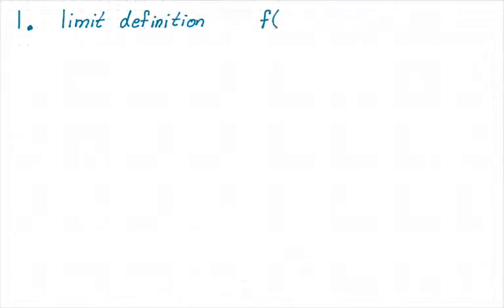So you will need to use the limit definition of derivatives to find the derivative of something. Okay, so let's say that my function is, let's see, because I want to pick one that's not on the practice final, so let's do 1 over x squared minus x. That seems good, okay?